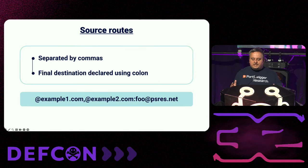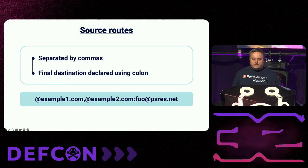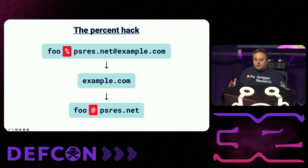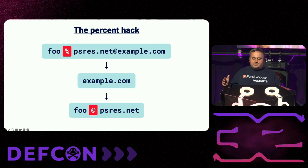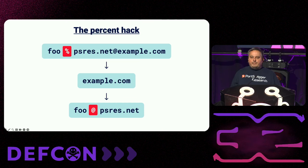A source route is a sequence of servers which an email is sent through before reaching its final destination. Servers in the chain are separated by commas, with the final destination marked with a colon before the recipient's full address. Another form of source routing is called the percent hack. Despite its name, the actual character is determined by the mailer. In this process, the email is initially sent to example.com, after which the percent symbol is converted into an at symbol, and the email is sent to fu.psres.net. This process can be repeated several times.